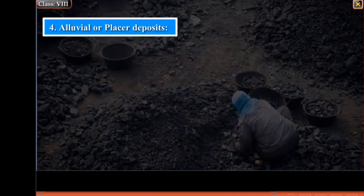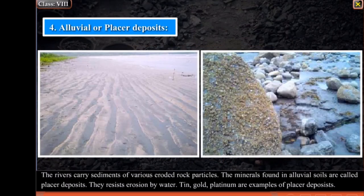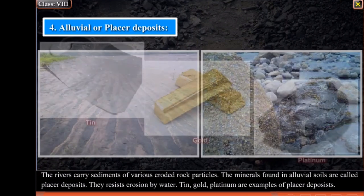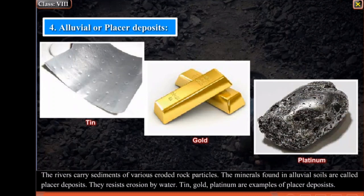Alluvial or Placer Deposits: Rivers carry sediments of various eroded rock particles. The minerals found in alluvial soils are called placer deposits. They resist erosion by water. Tin, gold and platinum are examples of placer deposits.